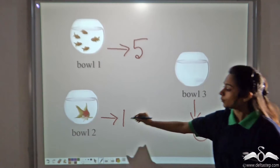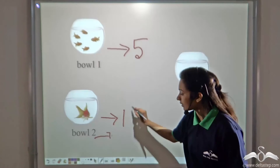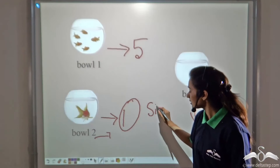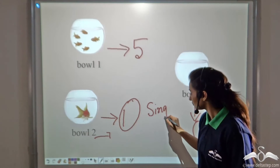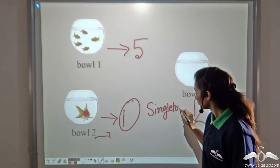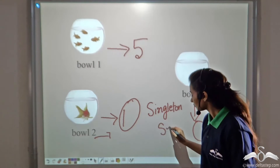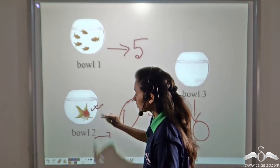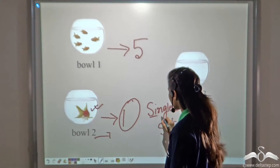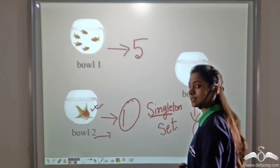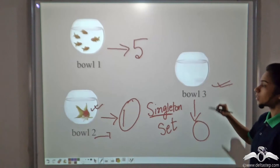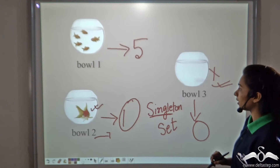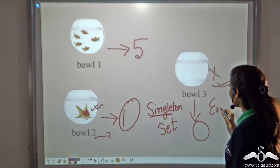In bowl two we can see there is only one element, so this will be called a singleton set. Why singleton? Because this bowl has only a single element — one element. So it is called a singleton set. Now this bowl has no element, so this set will be called an empty set.